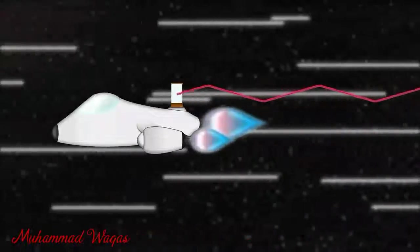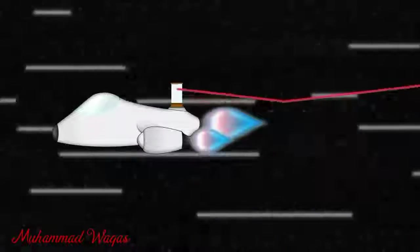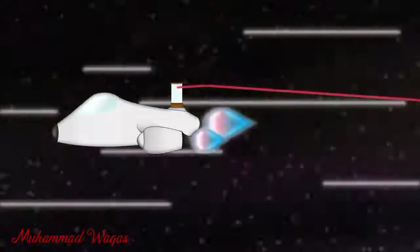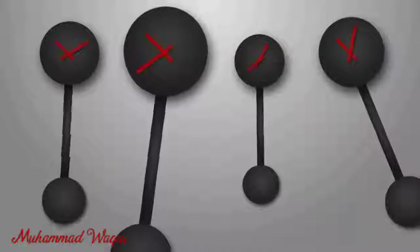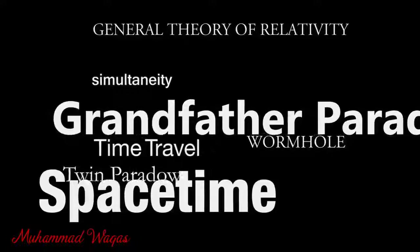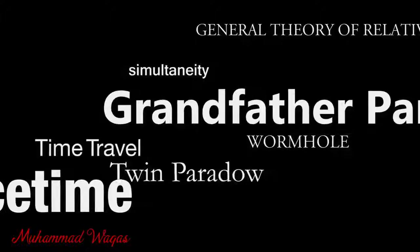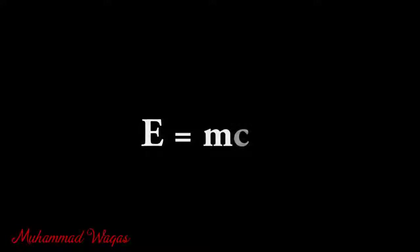Here, time is the variable quantity. The conclusion is that time slows down when you travel faster and faster — the faster you travel, the slower time passes for you. This broke all traditional understandings of time as a constant quantity and proved it to be different for different observers. The theory of relativity led to the discovery of many valuable findings, the most famous of which is E = mc².